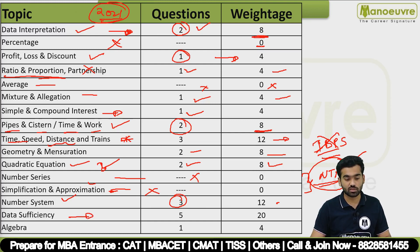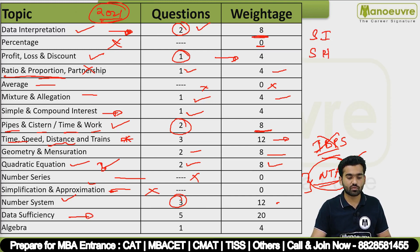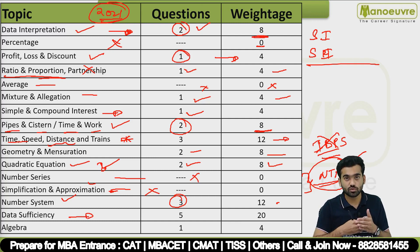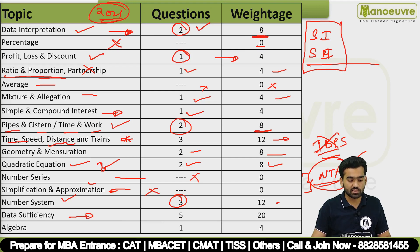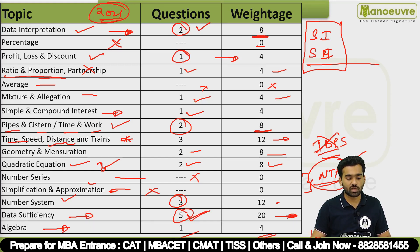The maximum questions were based on Data Sufficiency — Statement 1 and Statement 2 type, where you need to find which statement alone gives the answer or whether both are needed. Last year there were 5 questions from Data Sufficiency, so 5 into 4 equals 20 marks for this topic alone.